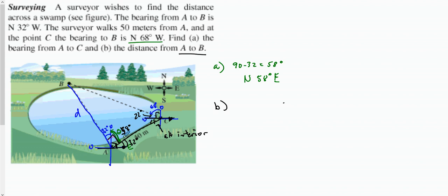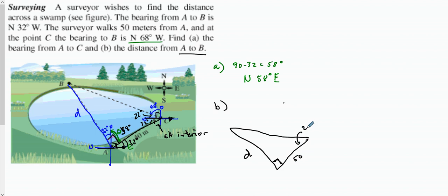This confirms things: we have 32 on both sides, and 58 and 32 are complementary. Drawing the triangle again: we have a 90-degree angle, the side of 50 meters, and now this angle equals 22 degrees from the 68-degree bearing, and 32 degrees from the other bearing. So 22 plus 32 equals 54 degrees — that is the angle of the triangle.